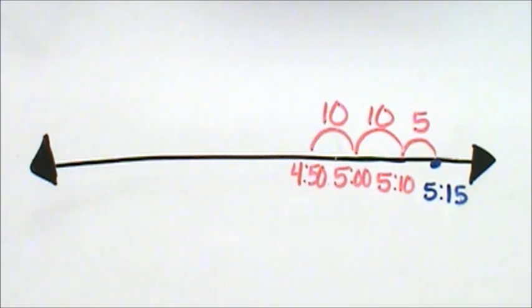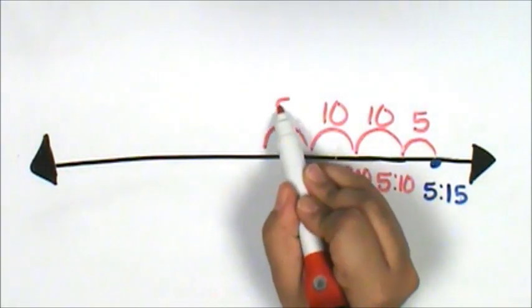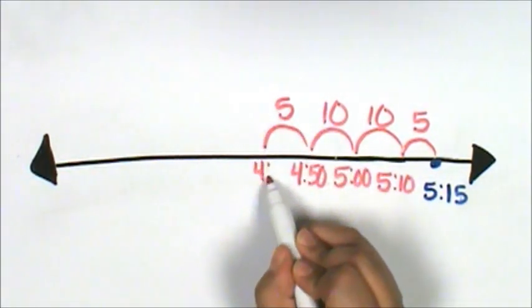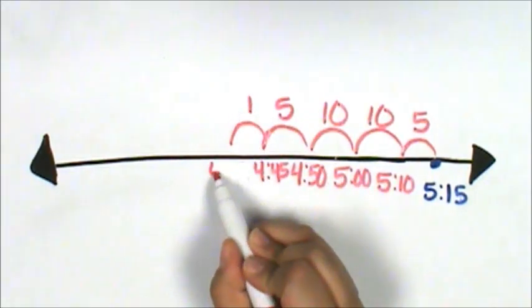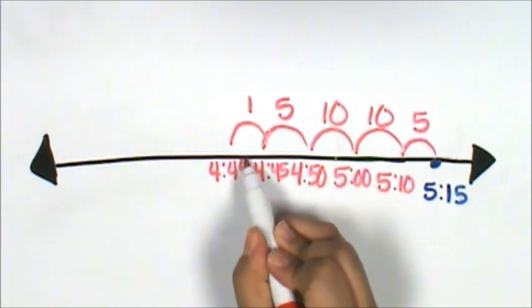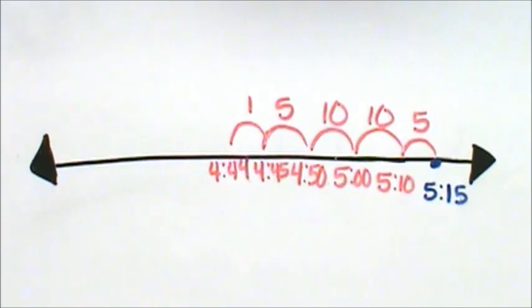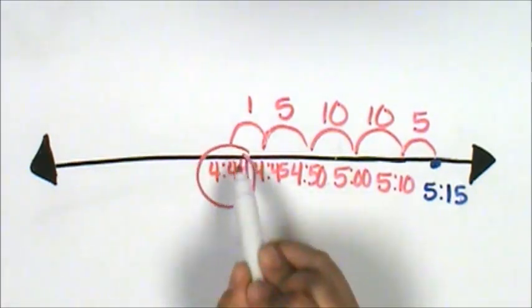Now I need to jump back or subtract 6 minutes. 5 minutes will be 4:45. 1 minute will be 4:44. Sandra's dance class began at 4:44.